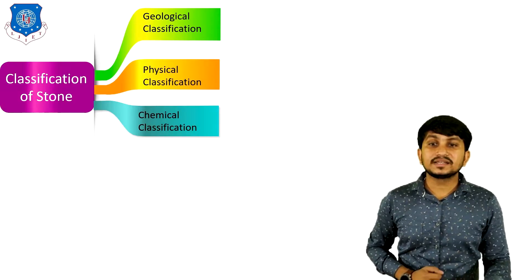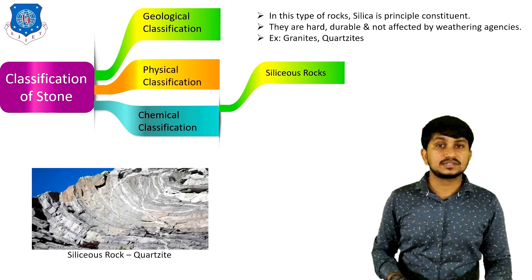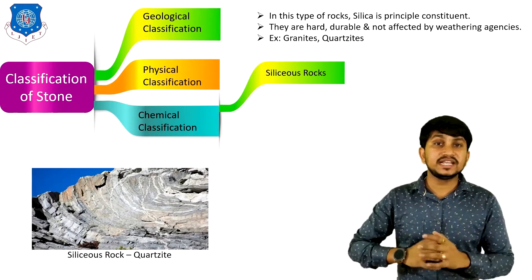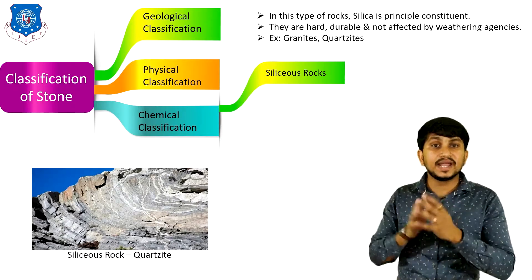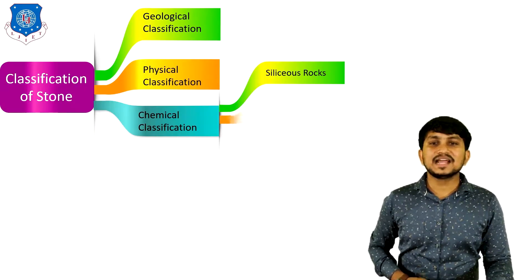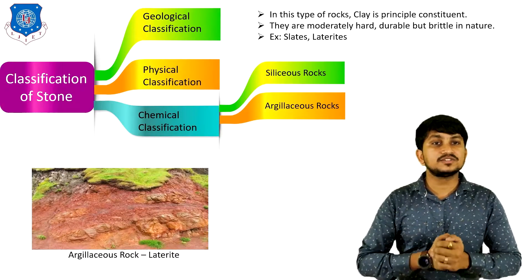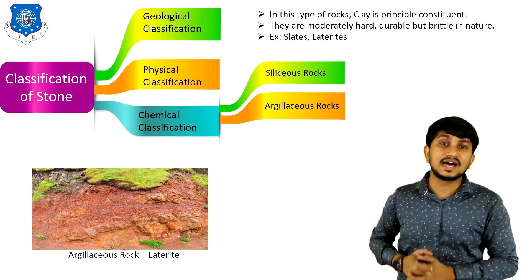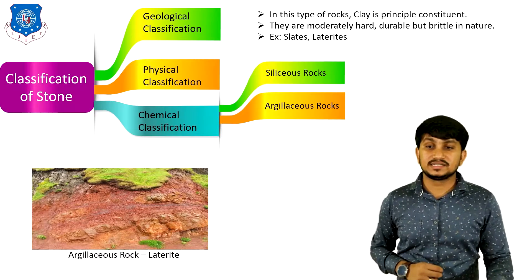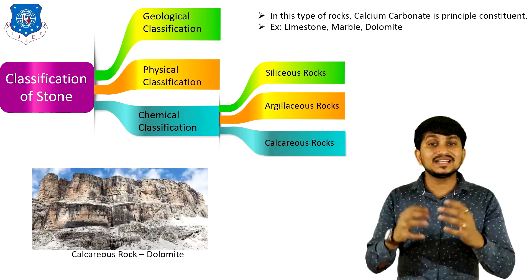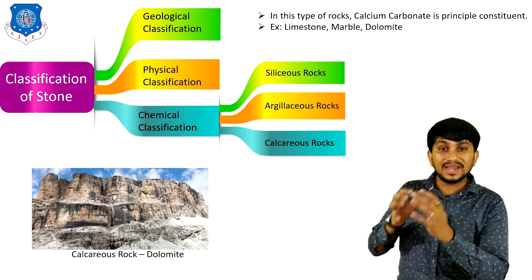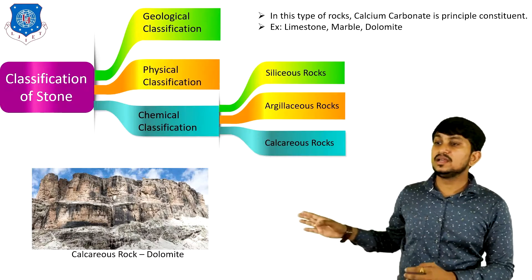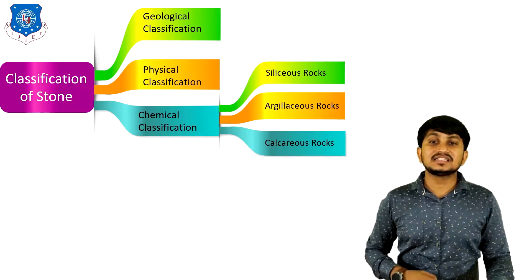In chemical classification, the first type is siliceous rocks, in which silica is the principal constituent. They are hard, durable, and not affected by weathering. Examples are quartzites. The second type is argillaceous rocks, in which clay is the principal constituent. They are moderately hard and durable but brittle. Examples are slates and laterites. The third type is calcareous rocks, whose main component is calcium carbonate. Examples are limestone, marble, and dolomite.